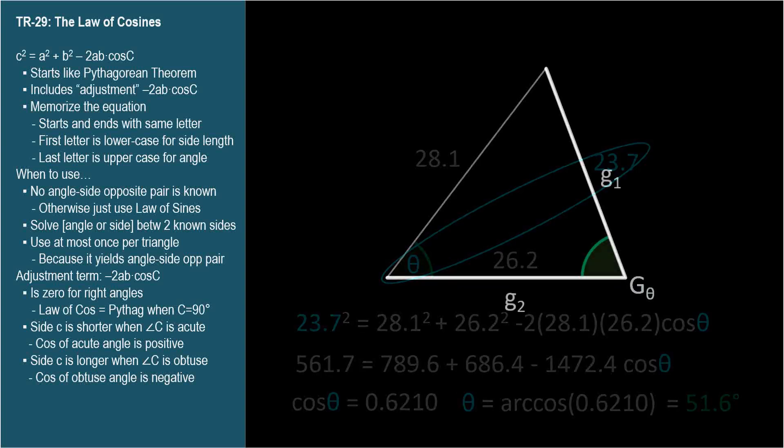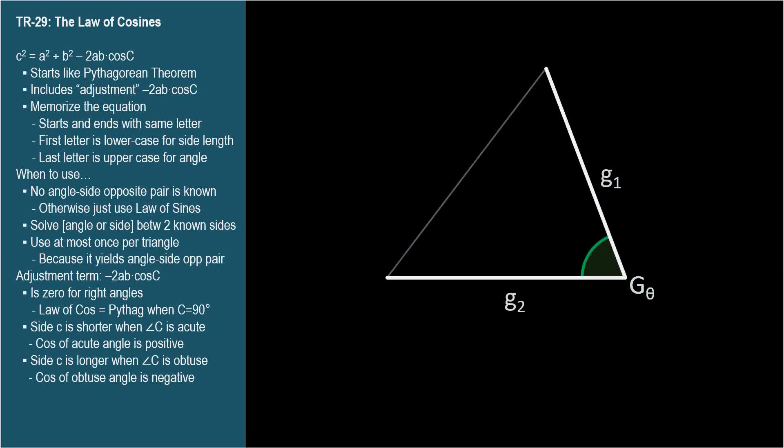Here's a bit more practice in recognizing and setting up Law of Cosines equations. Here we're given two sides, g sub 1 and g sub 2. Let's say g stands for given. And the angle between them, g sub theta. We don't have an angle side opposite pair, so we know we need to use the Law of Cosines to get one. We'll call the opposite side x and build the equation using the given angle and its opposite side x like this. The rest is algebra.